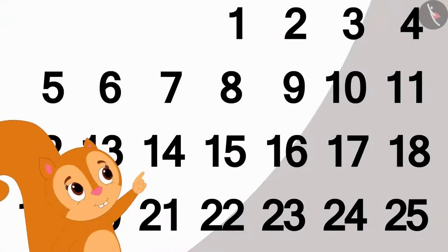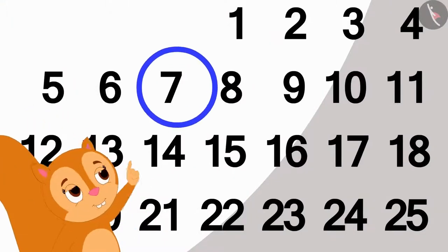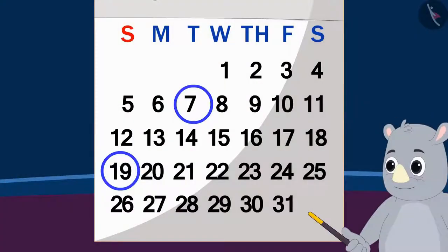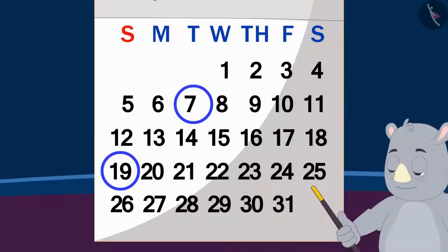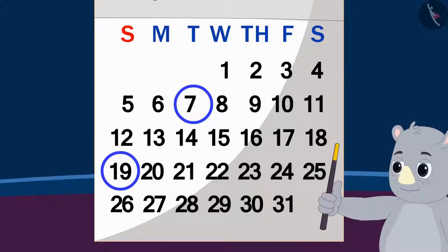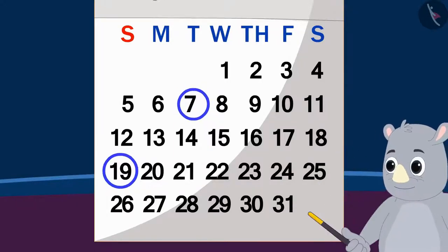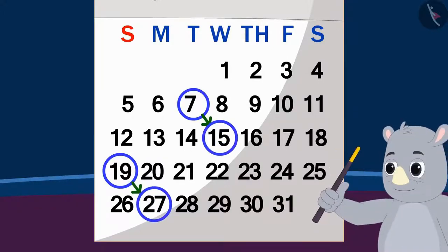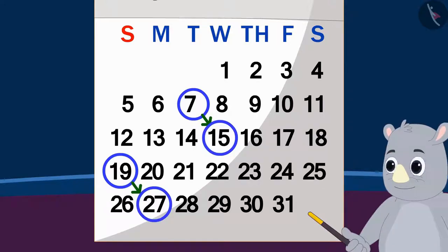Chanda chose the date 7th, and Babban chose the date 19th. Now, Gagu asked both of them to add their chosen date and the date written in the diagonally opposite direction.